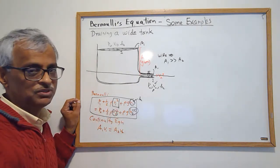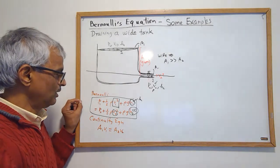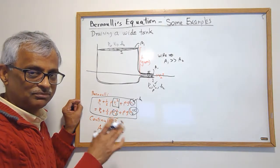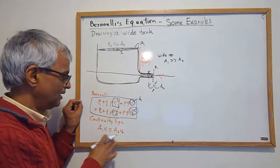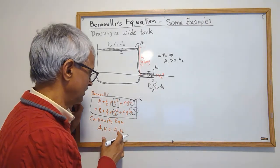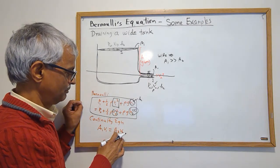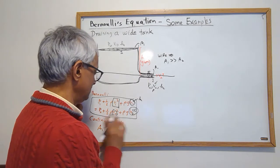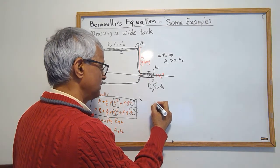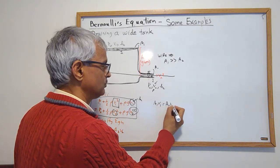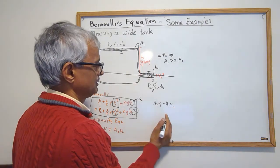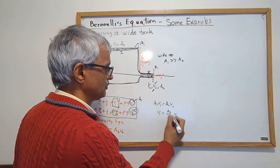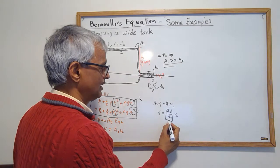You can see that I can't get v2 unless I say something about v1. Assuming v2 is some finite value, when you look at A1 v1 equals A2 v2, v1 is A2 over A1 times v2, and it is saying that this thing is very small.